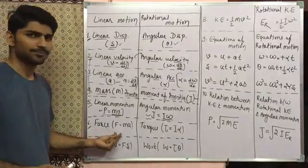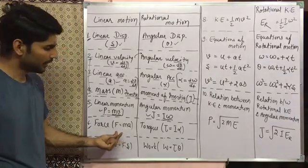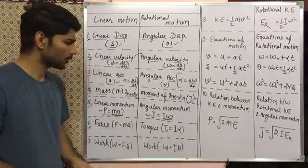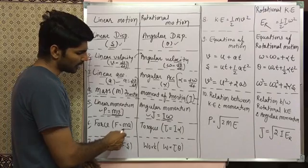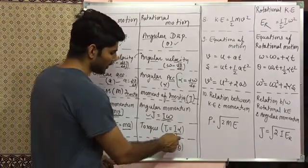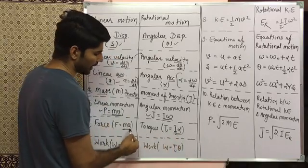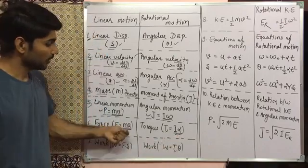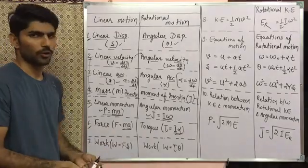The next point is force. In linear motion, force is the rate of change of momentum, given by mass times acceleration (F = ma). In rotational motion we have torque, which is also the rate of change of angular momentum. Torque replaces mass with moment of inertia and acceleration with angular acceleration, so torque = I × α.